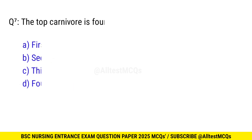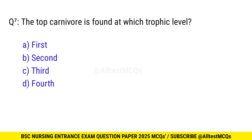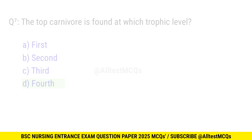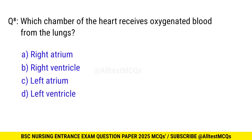Question No. 7: The top carnivores are found at which trophic level? The correct option is D: Fourth. Question No. 8: Which chamber of the heart receives oxygenated blood from the lungs? The right option is C: Left atrium.